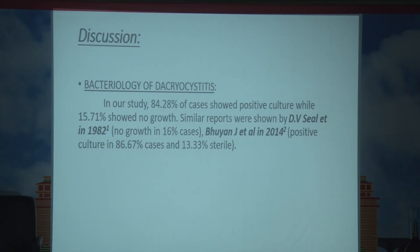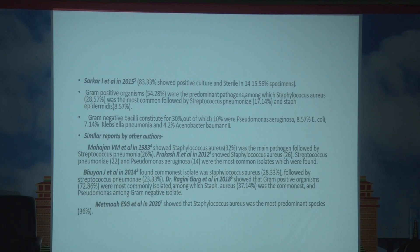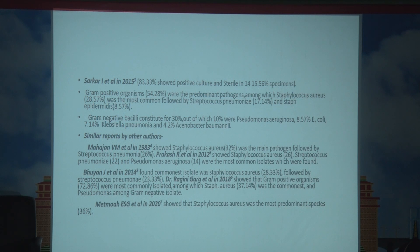Discussion — bacteriology of Dacryocystitis. In our study, 84.28% of cases showed positive culture while 15.71% showed no growth. Similar reports were shown by D.V. Bhatt et al. in 1982, Bhuyan J. et al. in 2014, and Sarkar I. et al. in 2015. Among gram-positive organisms, the predominant pathogen was Staphylococcus aureus, followed by Streptococcus pneumoniae and Staphylococcus epidermidis. Among gram-negative bacilli, Pseudomonas was the predominant one, followed by E. coli, Klebsiella, and Acinetobacter baumannii.